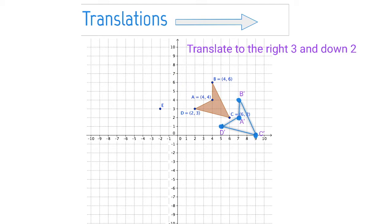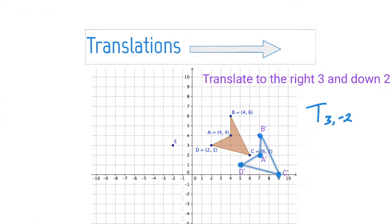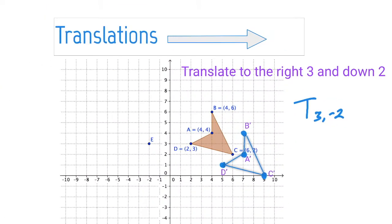Sometimes you'll see it in notation form. A translation to the right three and down two would look something like this: T(3, -2). What you're doing is you're just adding three to the X value and subtracting two from the Y value. So that's all you're doing — it's just a translation, just a sliding of the figure.